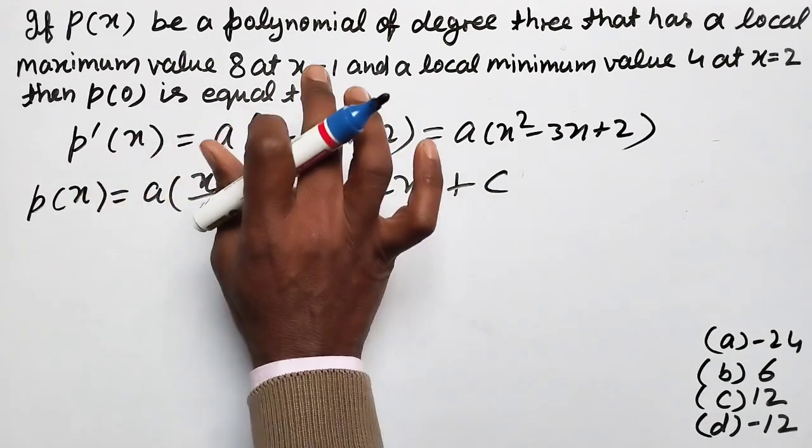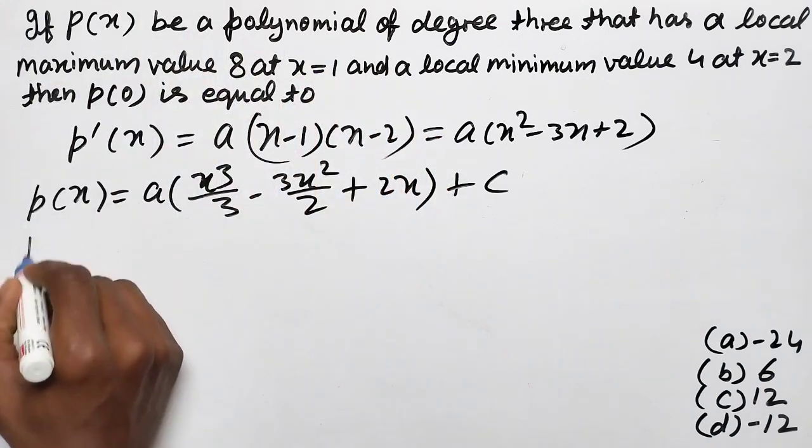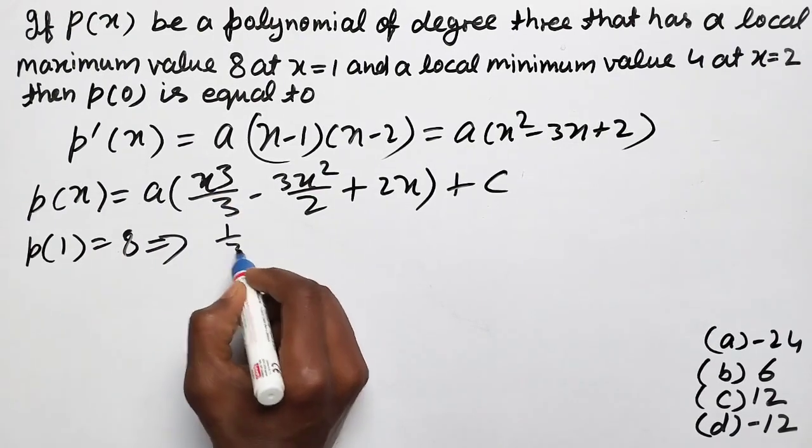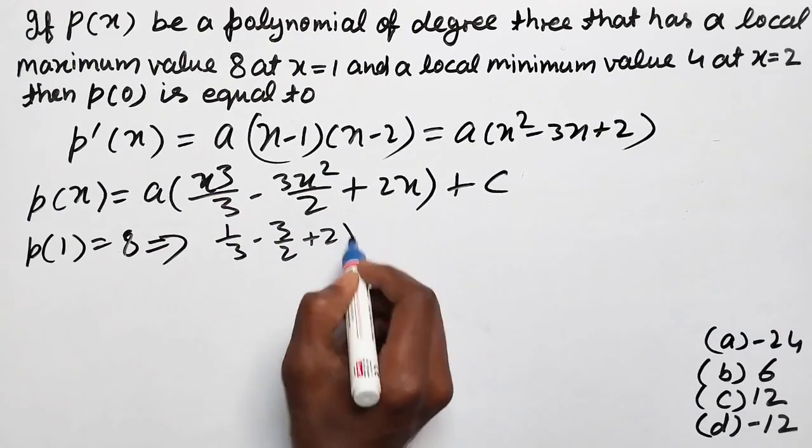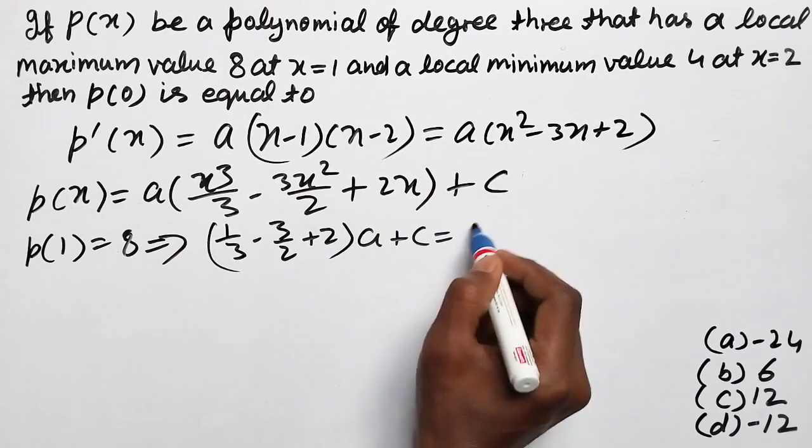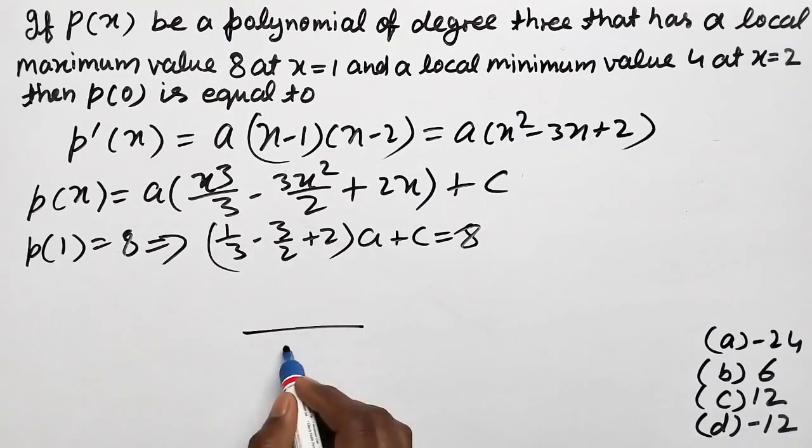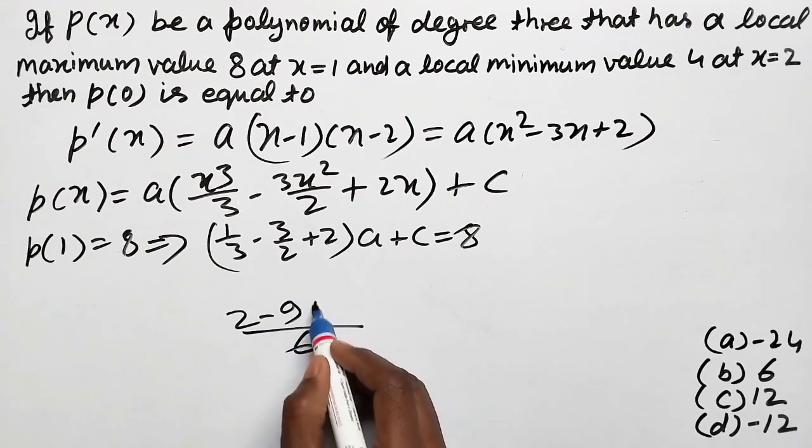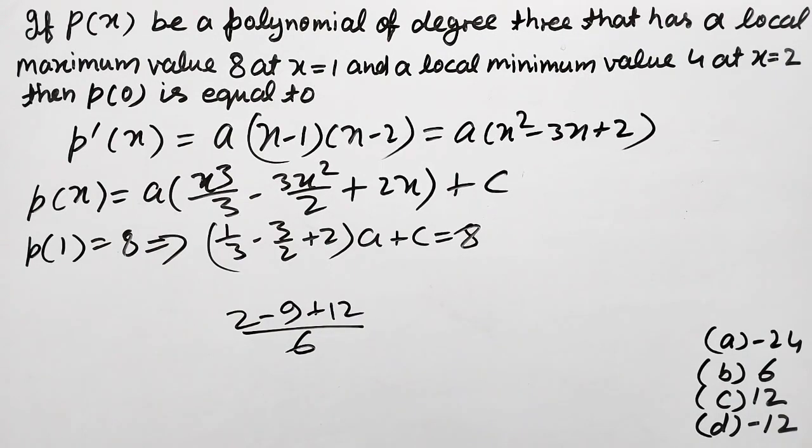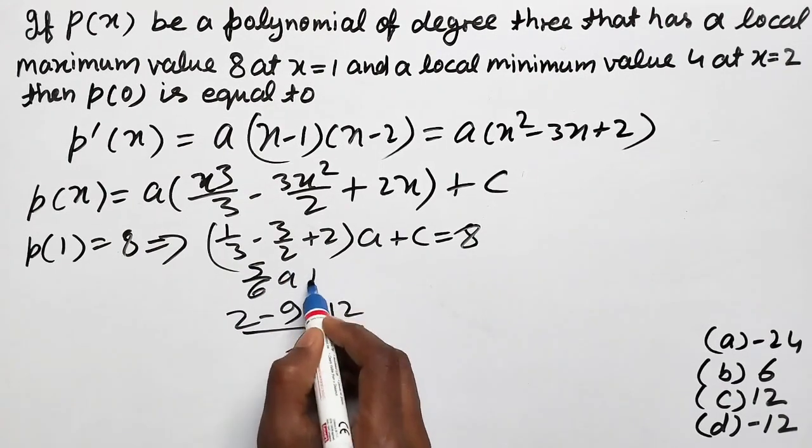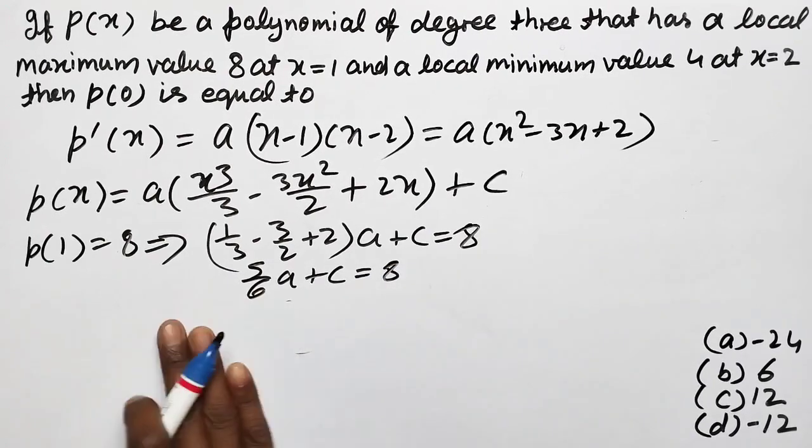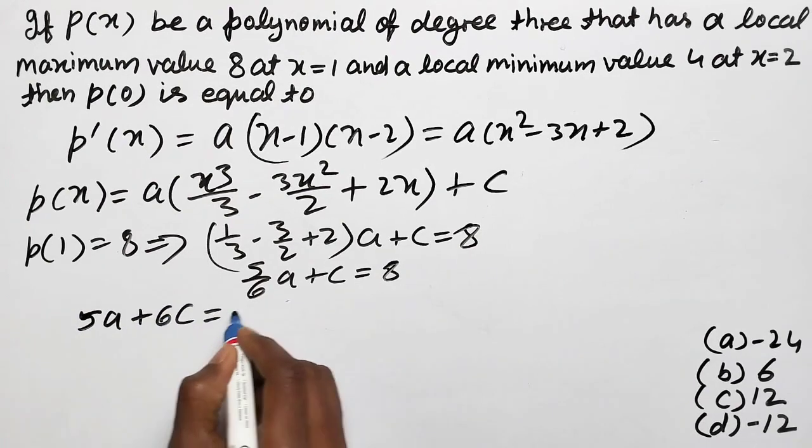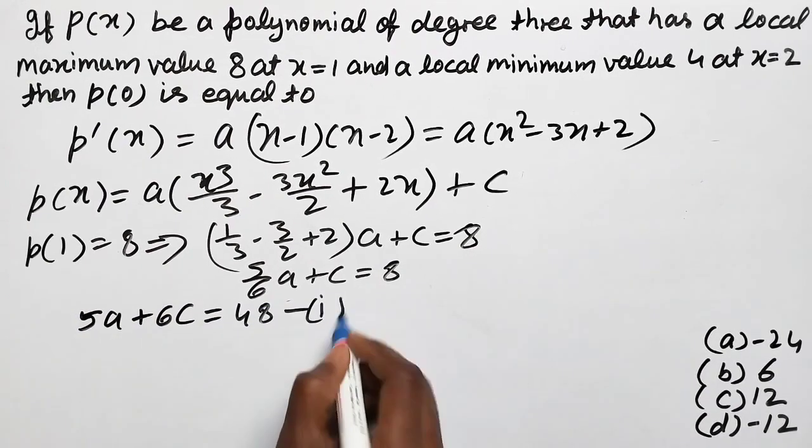Now given that at 1 the maximum value is 8, means P(1) equal 8, so A(1/3 minus 3/2 plus 2) plus C equal 8. If we add these, this is 6, means 2 minus 9 plus 12, 5/6 A plus C equal 8. Multiply by 6, so 5A plus 6C is equal 48. First equation.